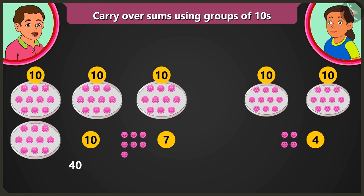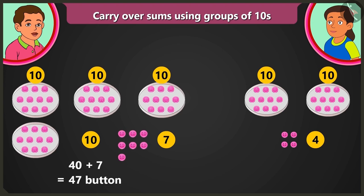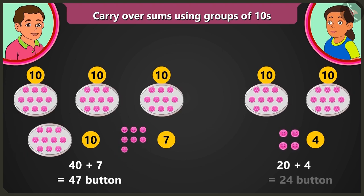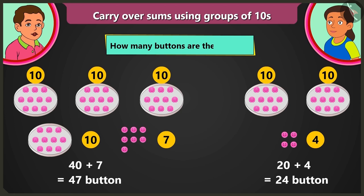Look Bubbly, there are forty-seven pink buttons and twenty-four red buttons. So tell me, how many buttons are there in total?